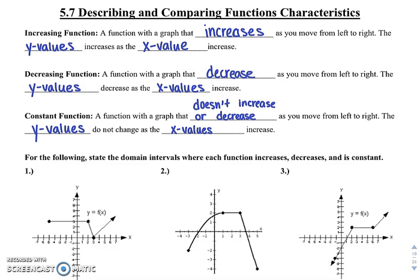A function with a graph that decreases as you move from left to right means the y values decrease as the x values increase. As you move from left to right, that's what these are talking about.